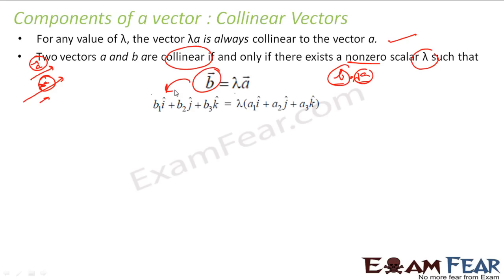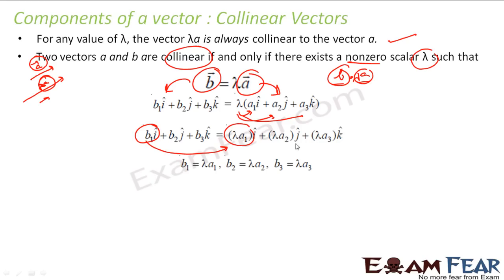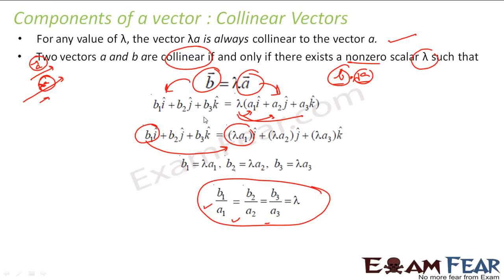Breaking into component form: b = b1·î + b2·ĵ + b3·k̂ and a = a1·î + a2·ĵ + a3·k̂. Equating these, we get b1 = λ·a1, b2 = λ·a2, and b3 = λ·a3. Therefore b1/a1 = b2/a2 = b3/a3 = λ. So if two vectors are collinear, dividing their corresponding î, ĵ, and k̂ components must give the same ratio — they must be proportional.